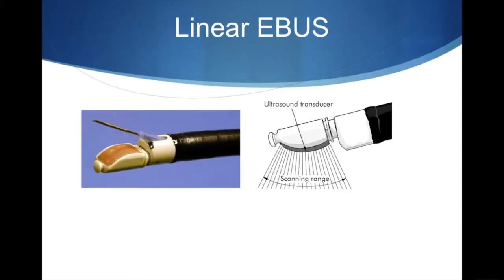This is linear EBUS and this is how we're going to biopsy that lymph node. This is the EBUS scope — it's a bronchoscope with a camera at the end, but at the tip it has an ultrasound. Out of the scope comes a needle, and the needle comes out in direct view of the ultrasound so we can needle mediastinal structures on the other side of the airway, confirming position on the ultrasound and watching the needle. The ultrasound transducer shines ultrasound in a linear fashion.